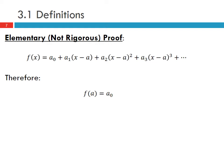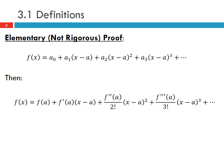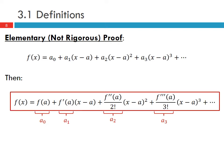So we have f(a) = a₀, f'(a) = a₁, f''(a) = 2! a₂, f'''(a) = 3! a₃, etc. That means we can rewrite this as f(x) = f(a) + f'(a)(x−a) + f''(a)/2! · (x−a)² + ..., which is the Taylor polynomial expansion. This shows how we arrive at the Taylor series expansion for a function.